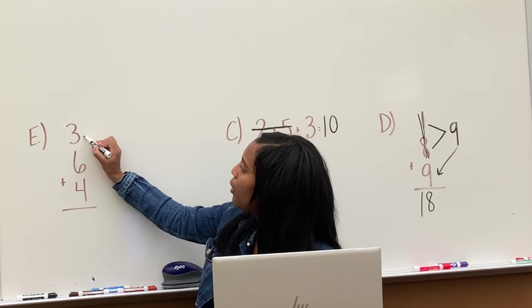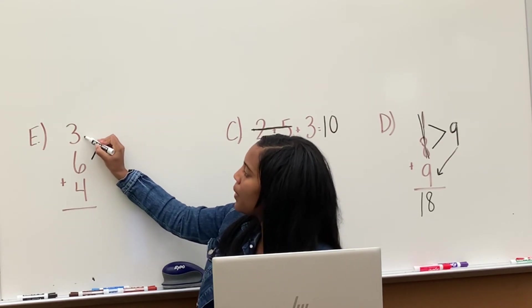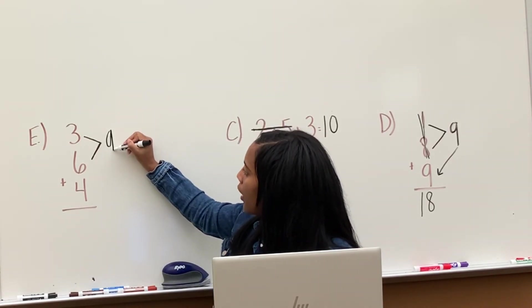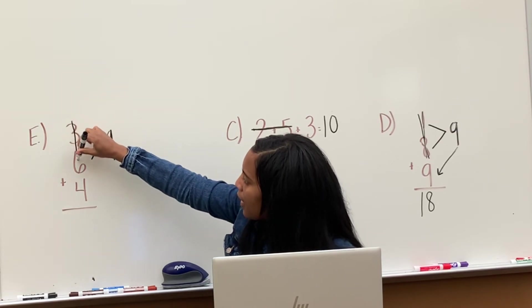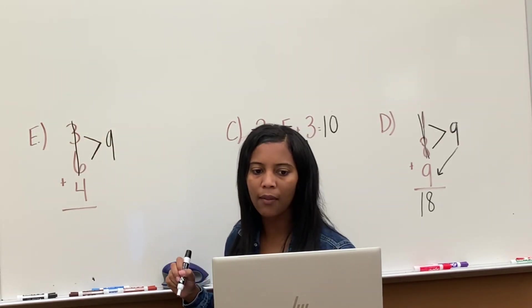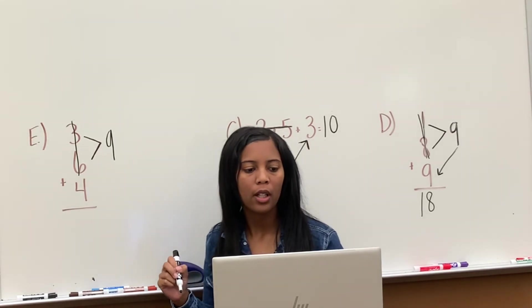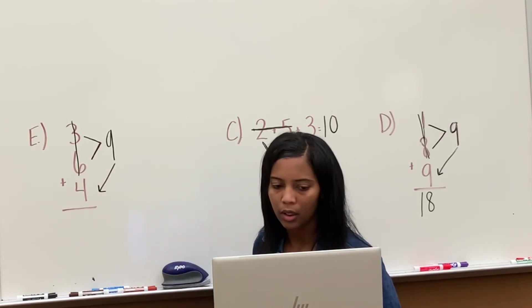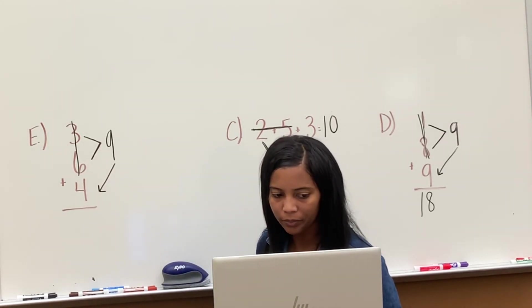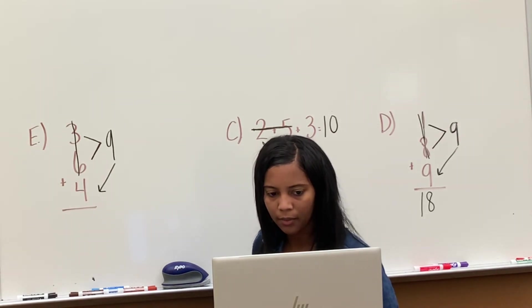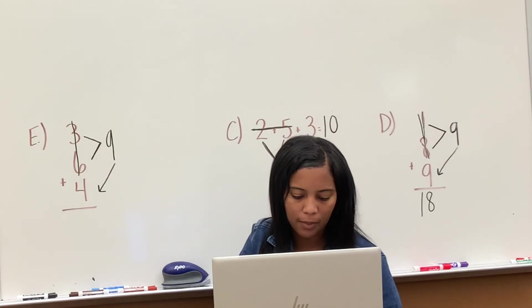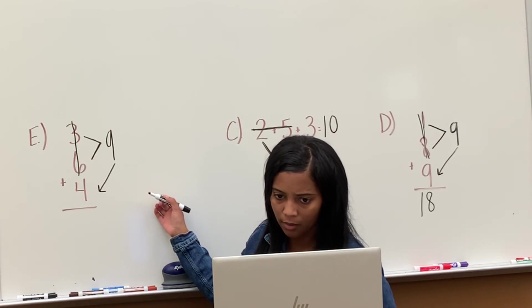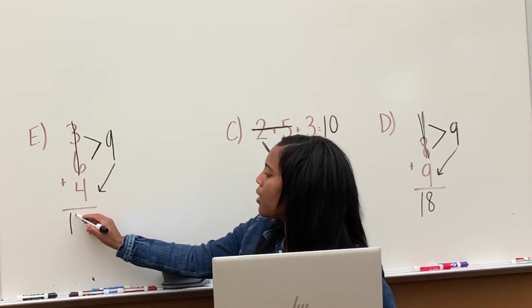So 3 plus 6. Anyone knows what 3 plus 6 equals? 9. And then I cross out 3 plus 6 because I added those two numbers already. And now all I have left is plus 4. So I connect my answer 9 to the plus 4. 9 plus 4. I don't know what 9 plus 4 equals. That's okay. 9 plus, that's one of our new facts. I believe we learned those last week. So 9 plus 4 will equal, does anyone know? 13. Good. 9 plus 4 is 13.